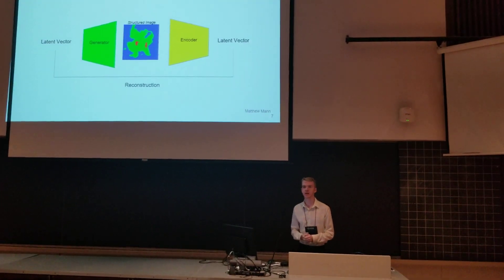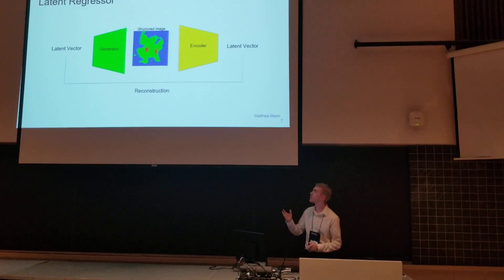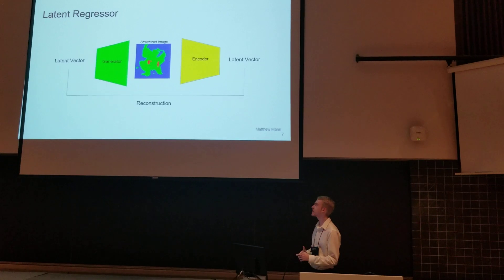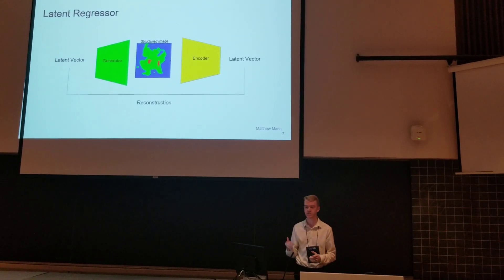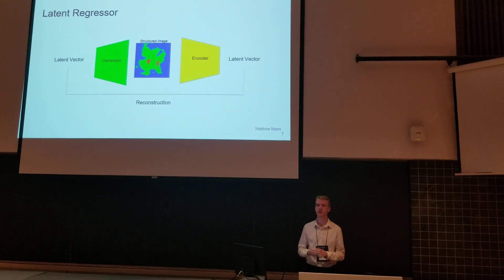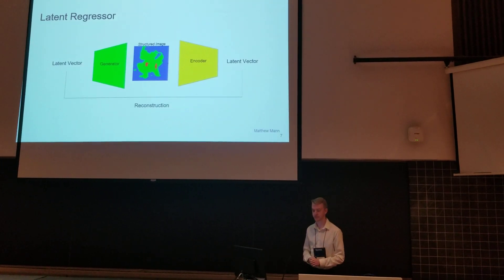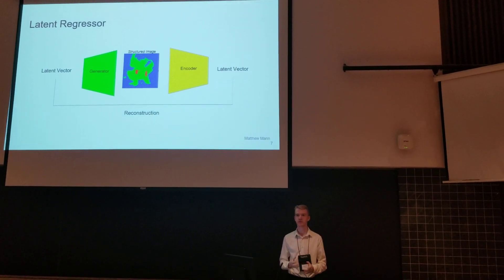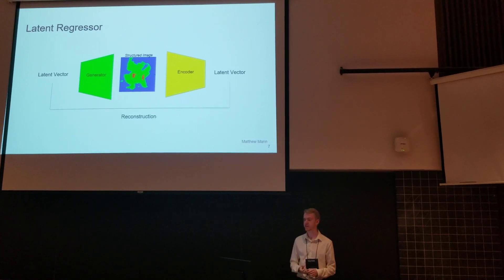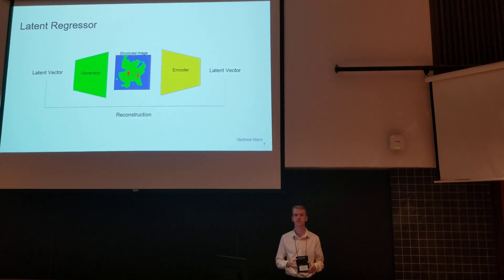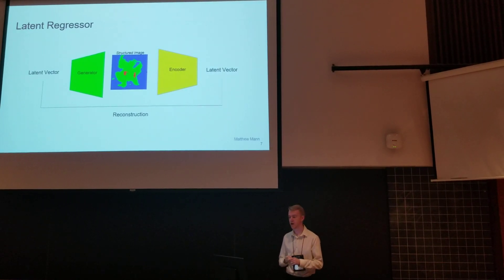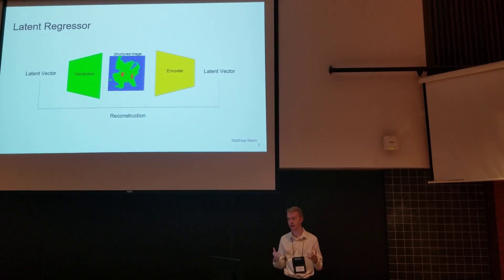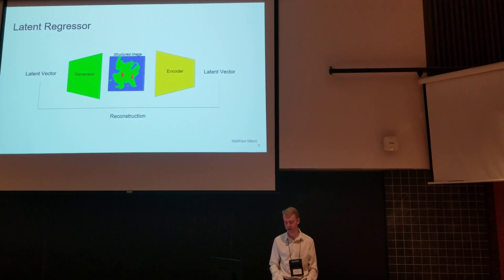The latent regressor is set up similarly, beginning with a latent vector and using the generator to generate the image, then the encoder must reconstruct the original latent vector from this generated image. These two training configurations ensure diversity in our model by ensuring all real images can be mapped to a latent space and all vectors in the latent space can generate a good-looking image.